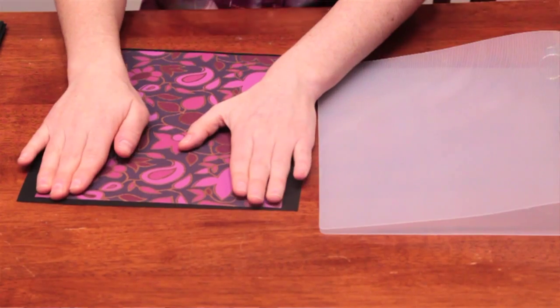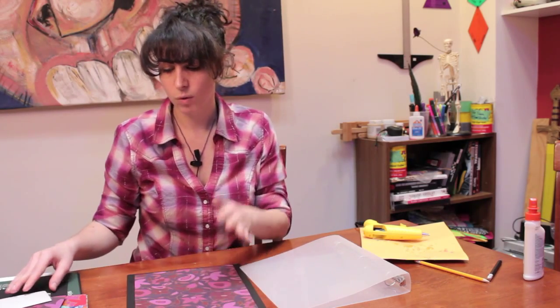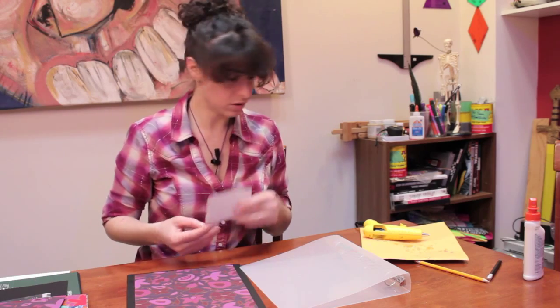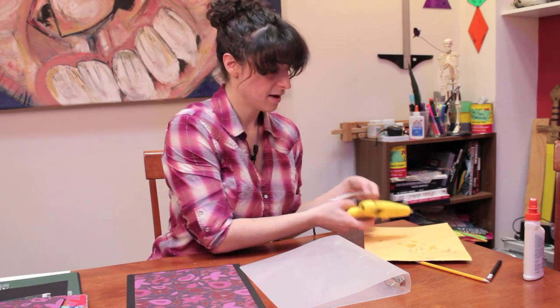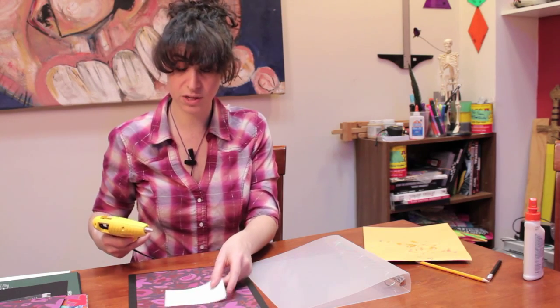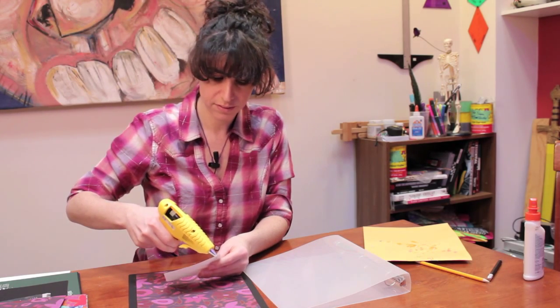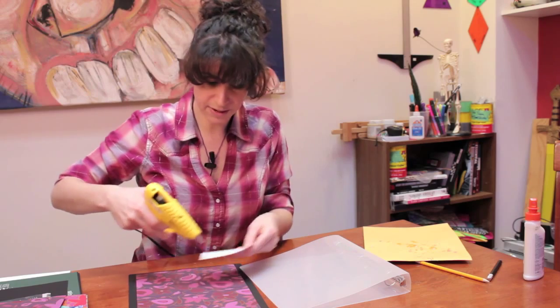Perfect. And now, what you can do is take a smaller piece of white paper or an index card would work perfectly for this. And I'm going to attach that here so that you have a subject label, so that you know what this binder is.